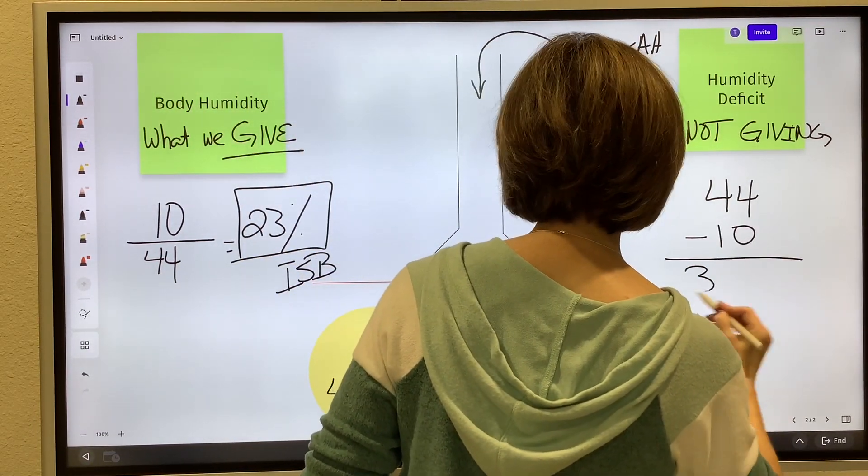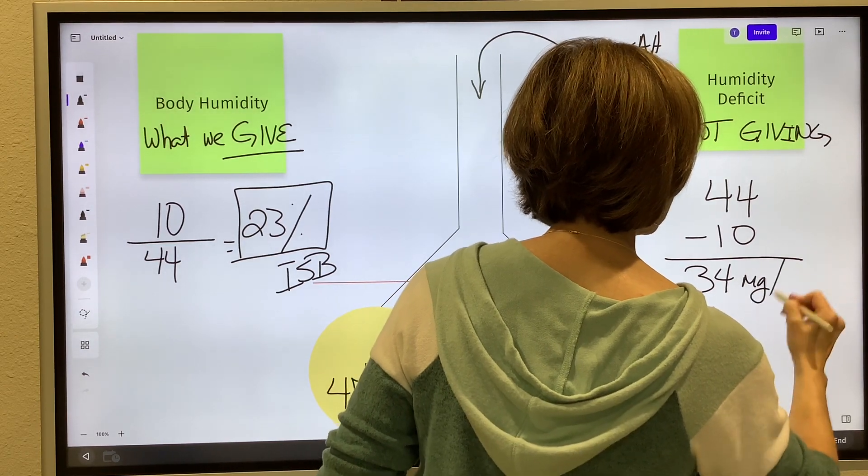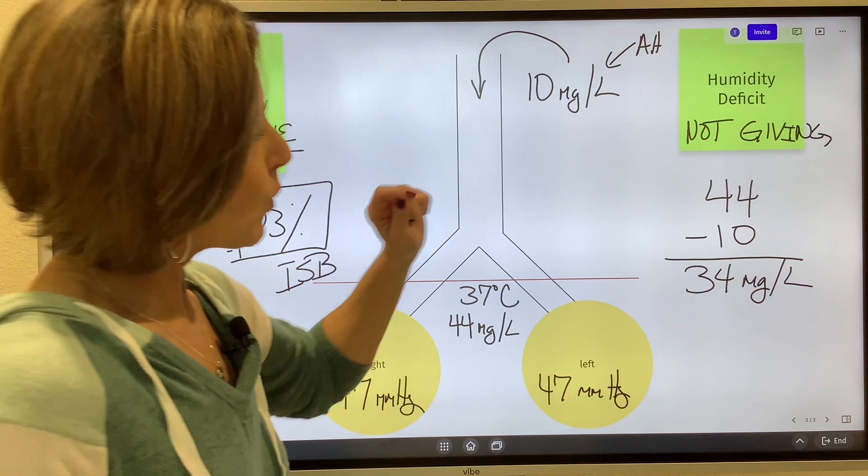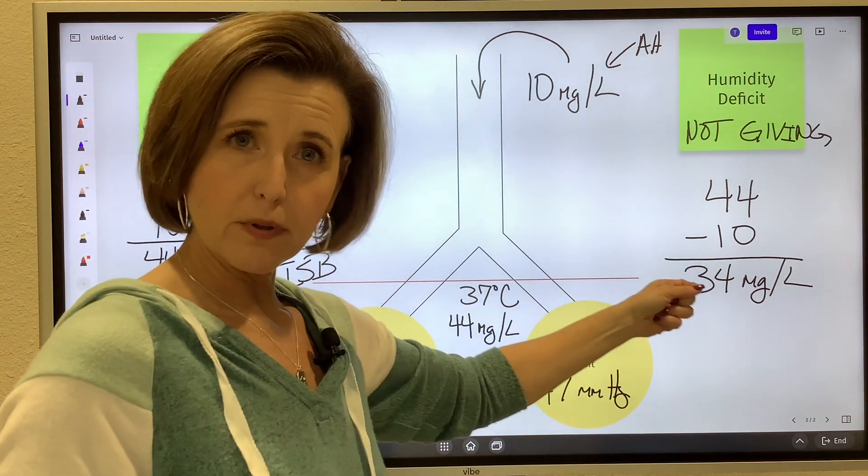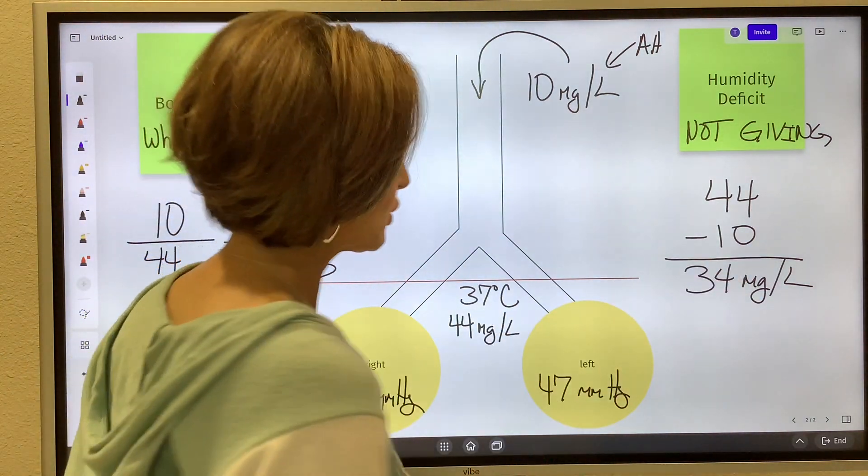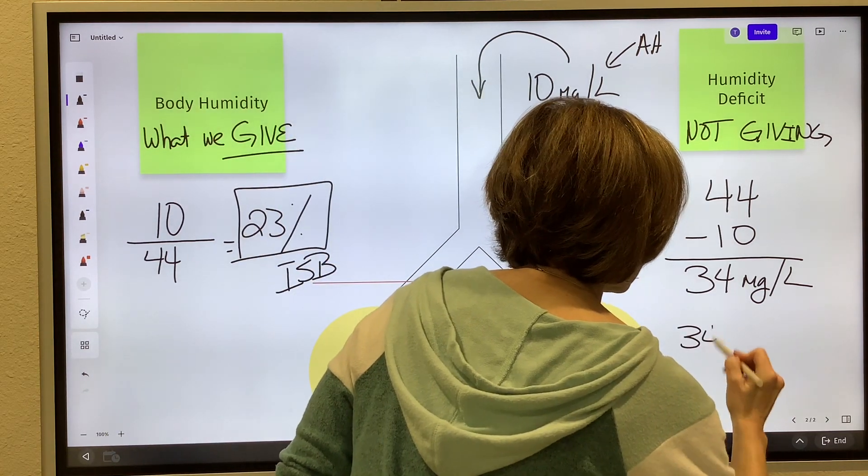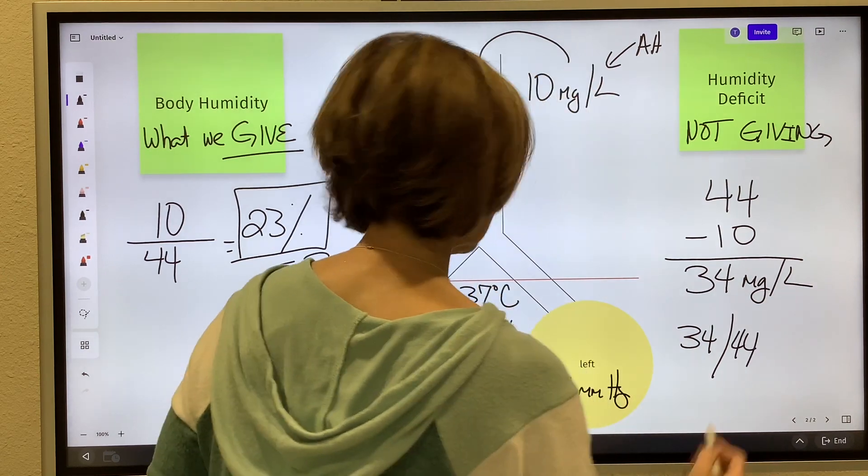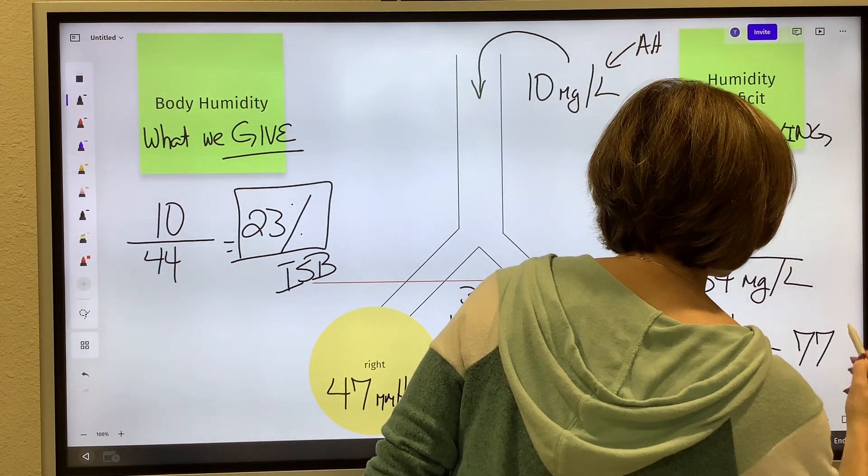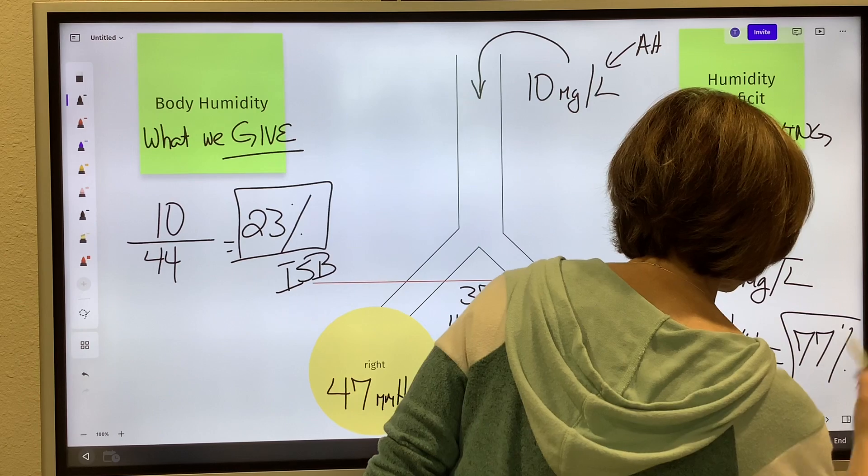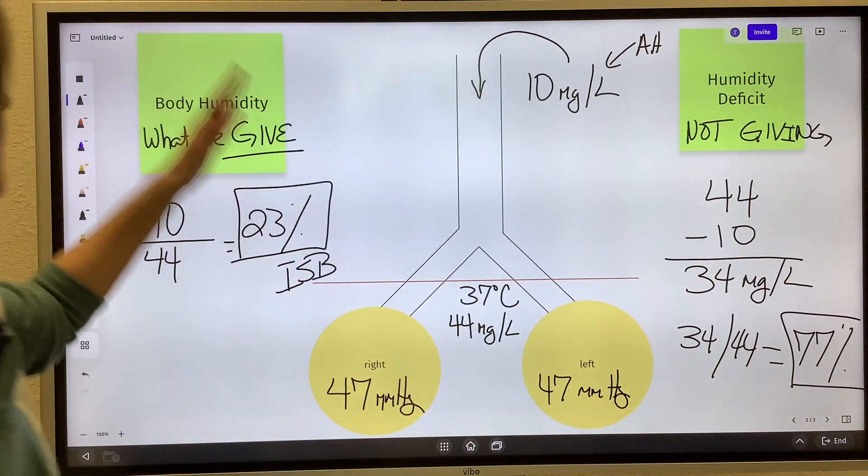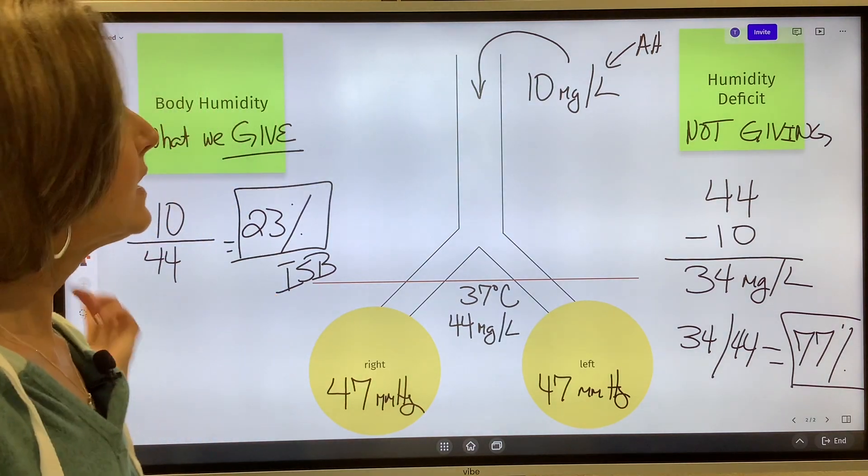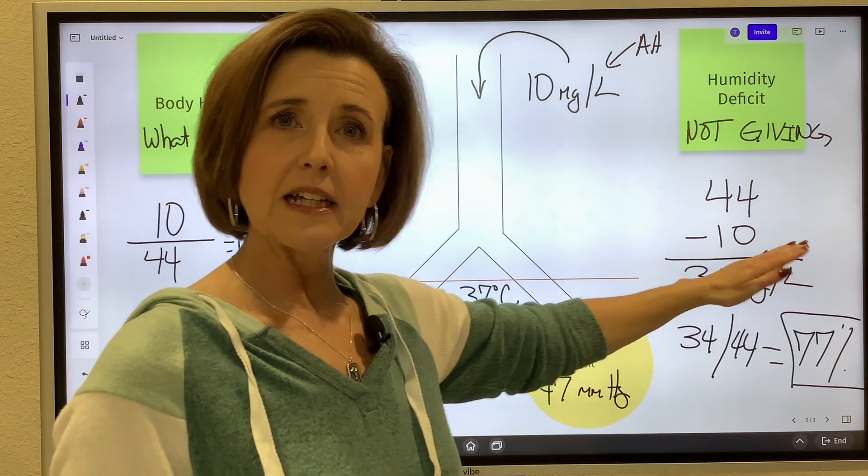That means we are not giving 34 milligrams per liter. We can transition this number, 34 milligrams per liter of the weight, into a percentage: 34 what we're not giving divided by the total that the patient needs is 77 percent. So body humidity is what we are providing to the patient, humidity deficit is what we are not giving.